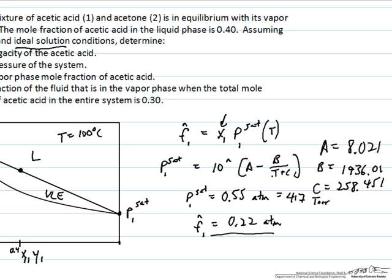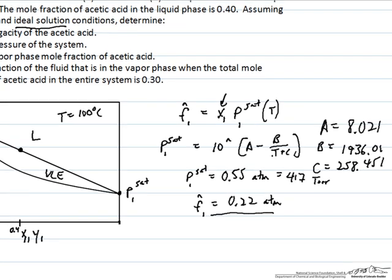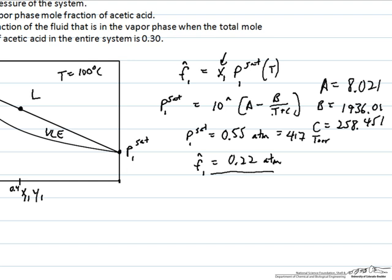I say that that's the fugacity of the liquid phase, but of course for vapor-liquid equilibrium, we have the fugacities for each component in each phase should be equal. That's what we're dealing with here, so this is just the fugacity of component 1. It will be useful for a subsequent step of the problem to determine the fugacity of component 2, or at least the saturation pressure of component 2.